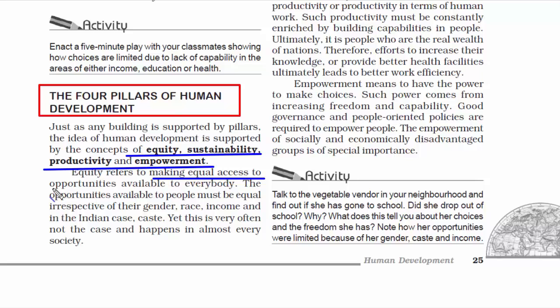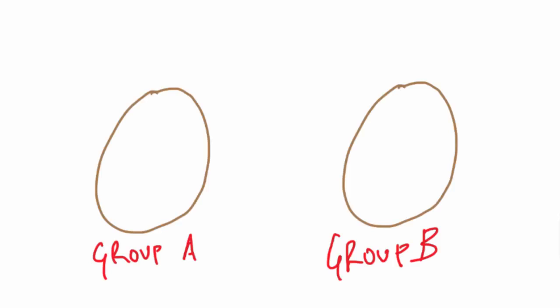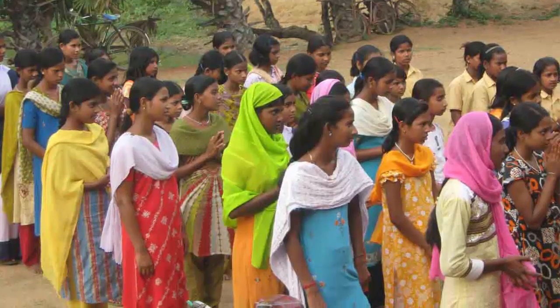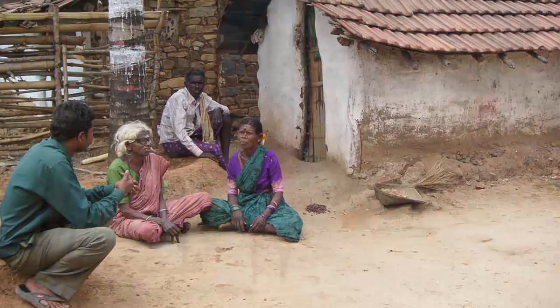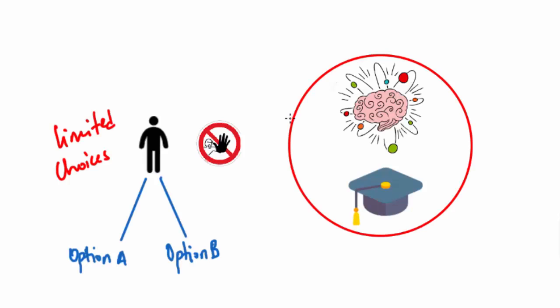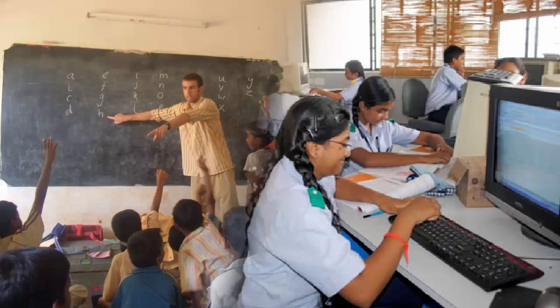The first pillar is equity. It means equal access to opportunities to everyone, irrespective of their gender, race, income, and caste. For example, if we observe two groups and find that group A has the most school dropouts, this leads to finding out the reason. In India, a large number of people belonging to socially and economically backward groups drop out of school. This shows how the choices of these groups get limited by not having access to knowledge — knowledge is not equally available to certain sections of society.